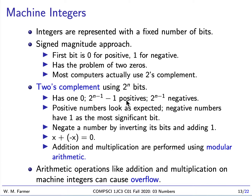But this has a problem because it leads to two different zeros: a negative zero and a positive zero. And as we all know, zero is neither negative nor positive. So most computers don't use this approach.